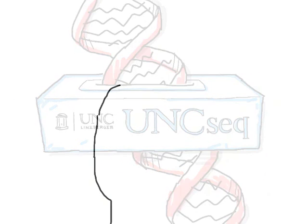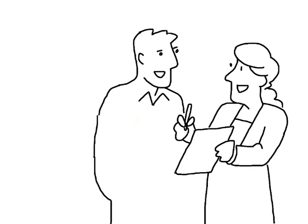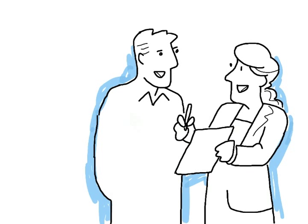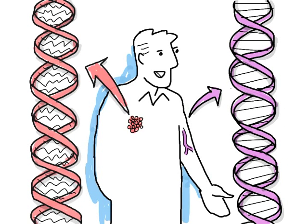Here is how it works. A patient with cancer comes to UNC and agrees to participate in our study. Some normal DNA is taken from the patient, usually their blood, and some DNA is collected from the tumor.